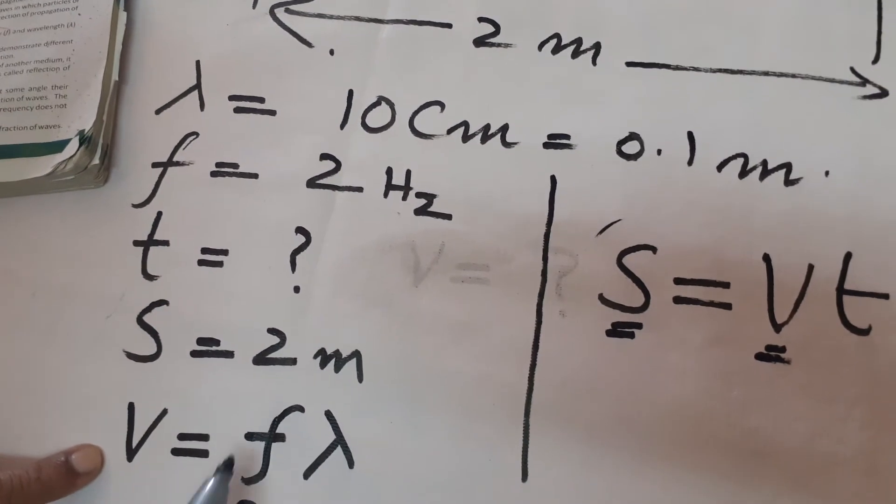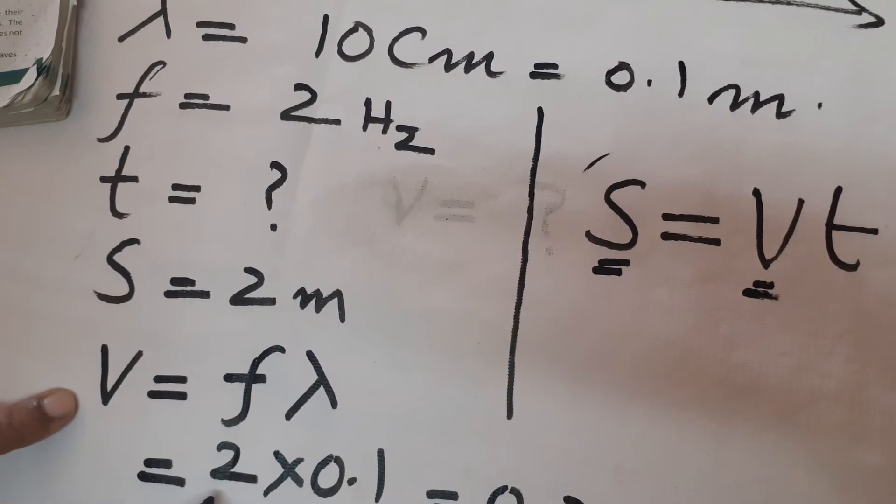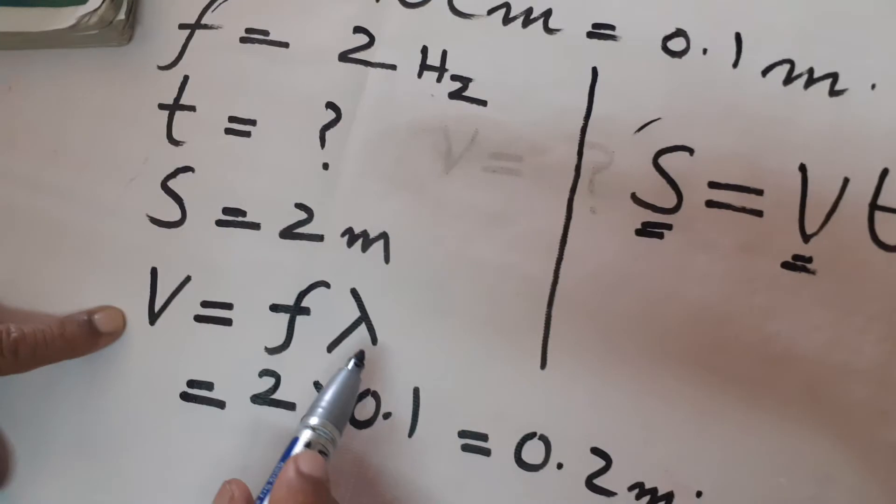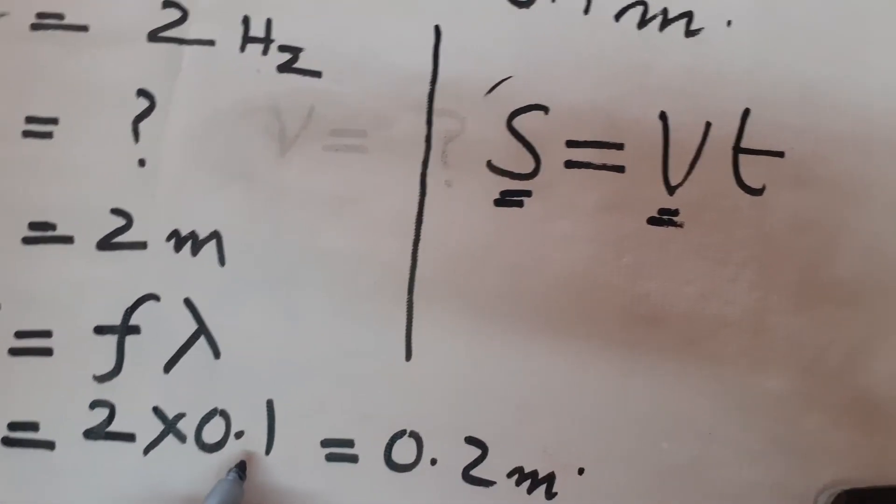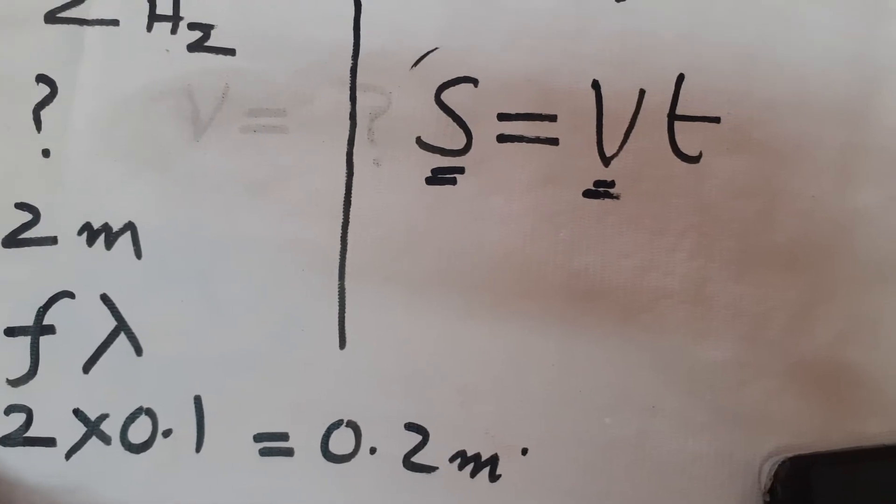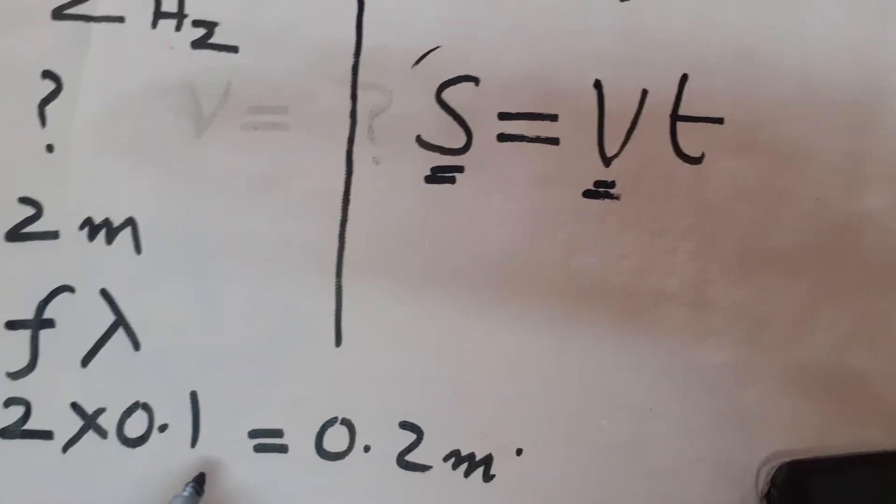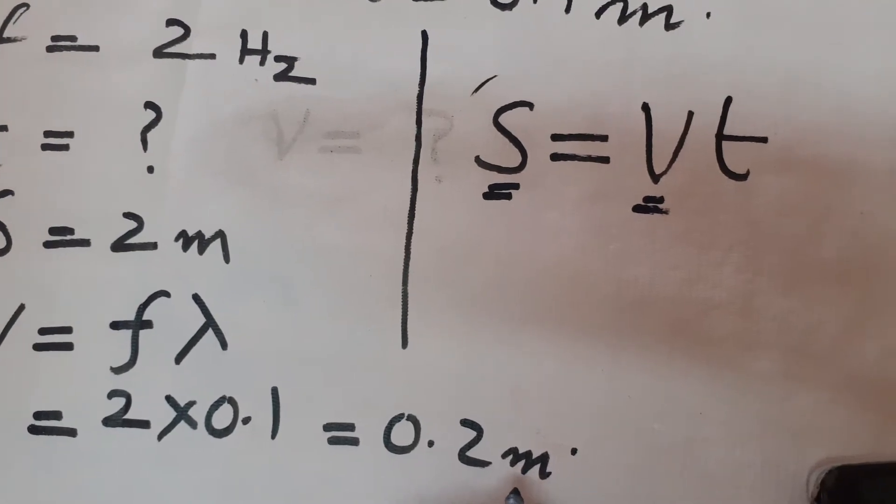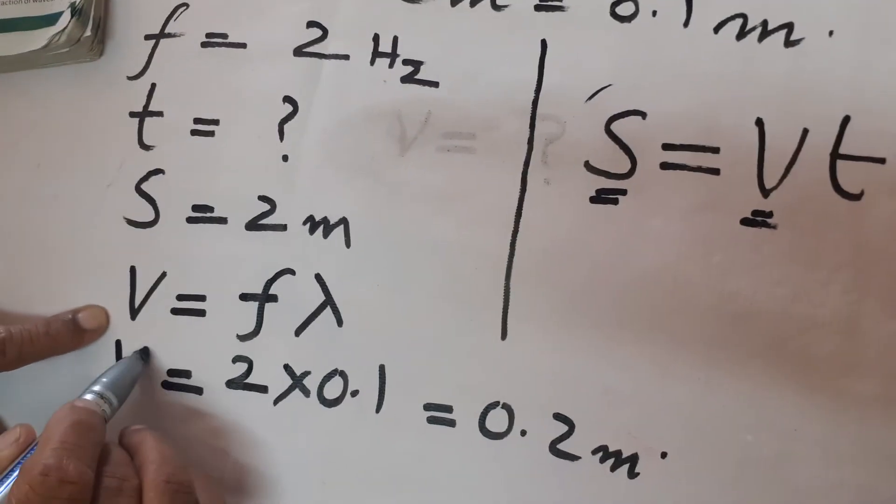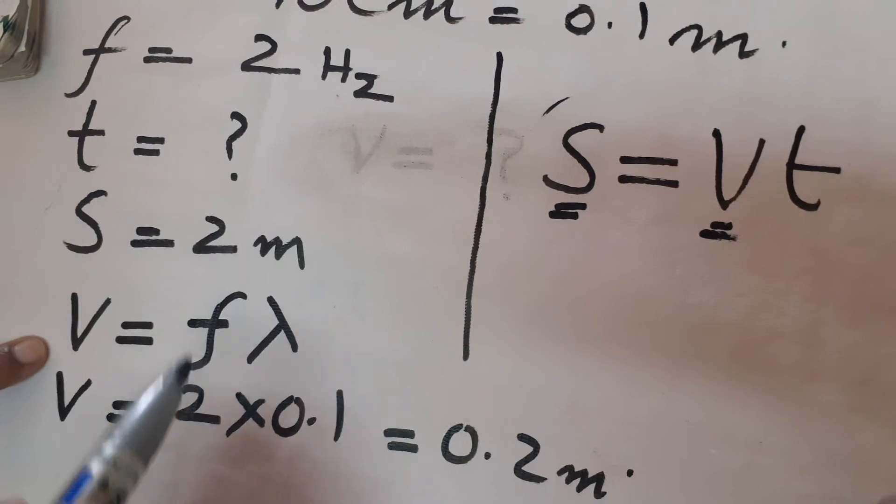v equals f times lambda. f equals 2 hertz and lambda, the wavelength, is 0.1 meters. By multiplying, we get v equals 0.2 meters per second.